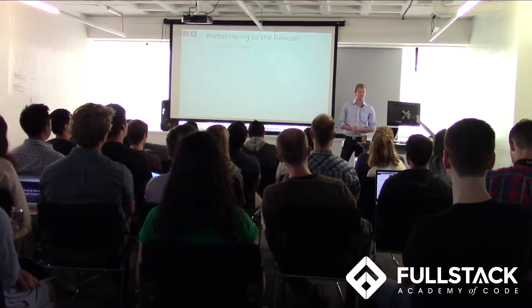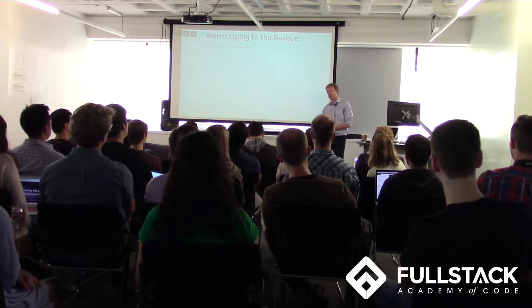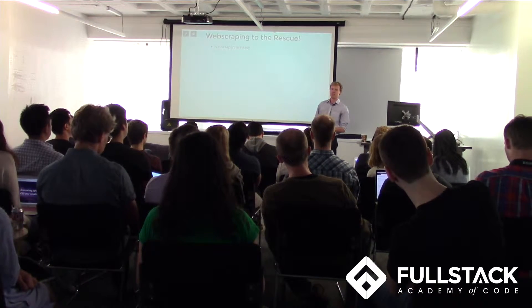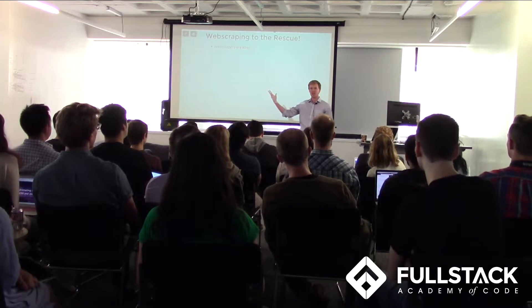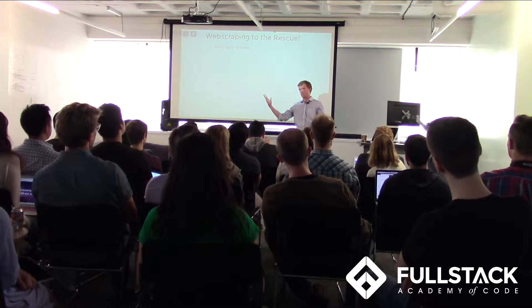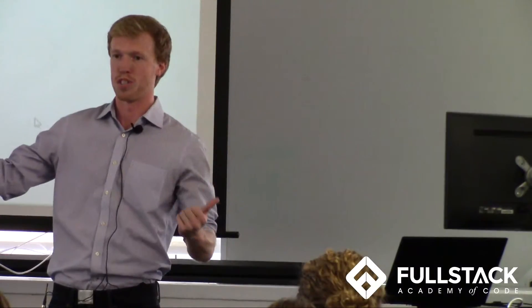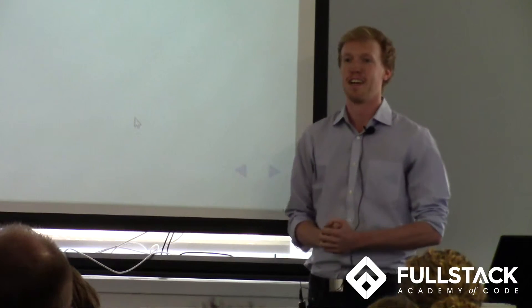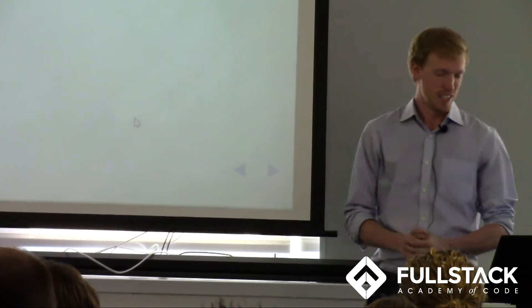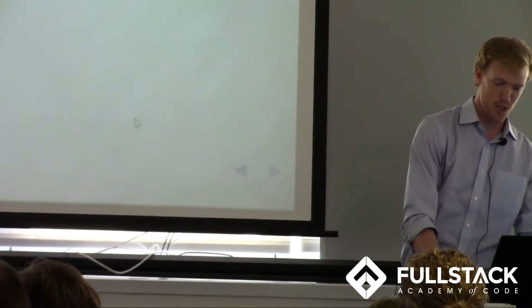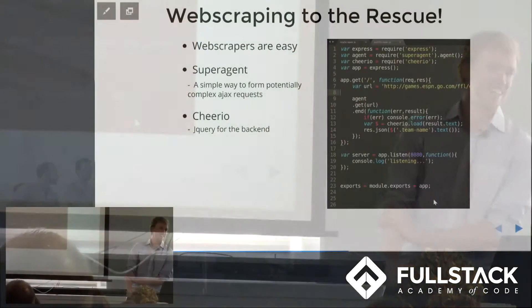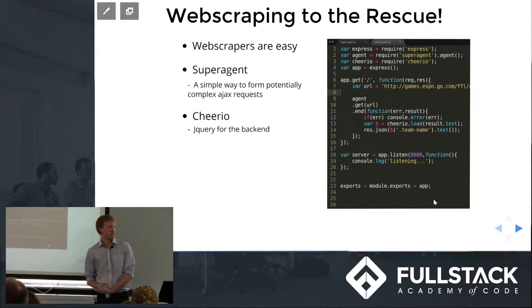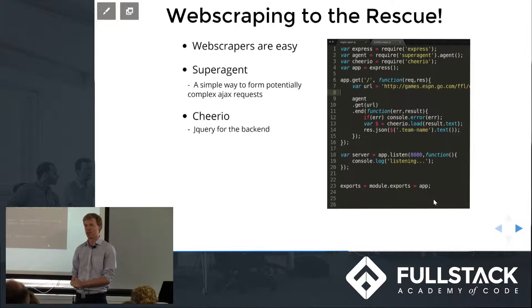It is very, very easy. If you think about it, what do you need to do? You need to: one, get some HTML from somewhere, and two, target some features or parts of that HTML. What does that sound like? Targeting things in HTML. Cheerio is pretty much a module for Node that works like jQuery on the back end.